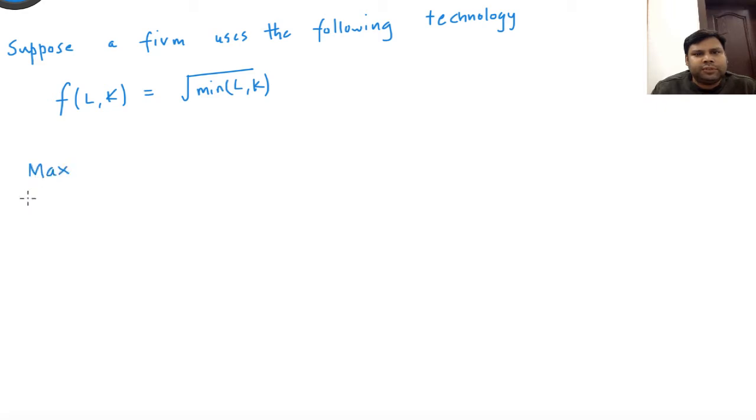The firm's problem here is to maximize with respect to Y, L, and K the profits: P times Y minus WL minus RK, subject to the constraint that Y equals root of min(L,K). So how do we solve this problem?